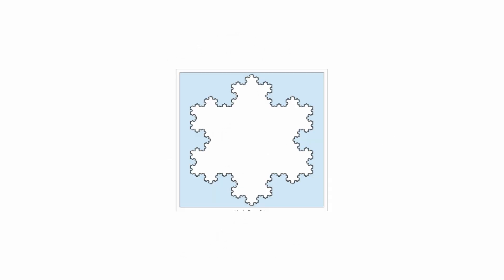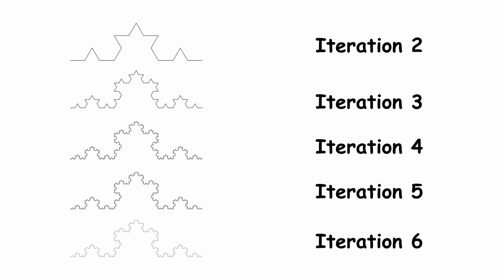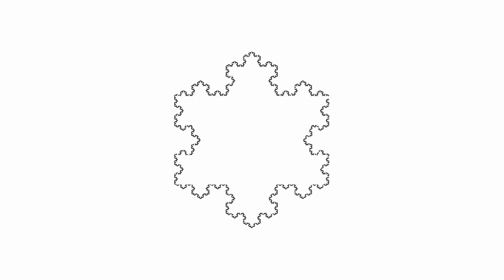Therefore, the following iterations of the Koch Snowflake are identified as Iteration 2, Iteration 3, Iteration 4, Iteration 5, Iteration 6, representing the Snowflake fractal as Sierpinski Triangle.